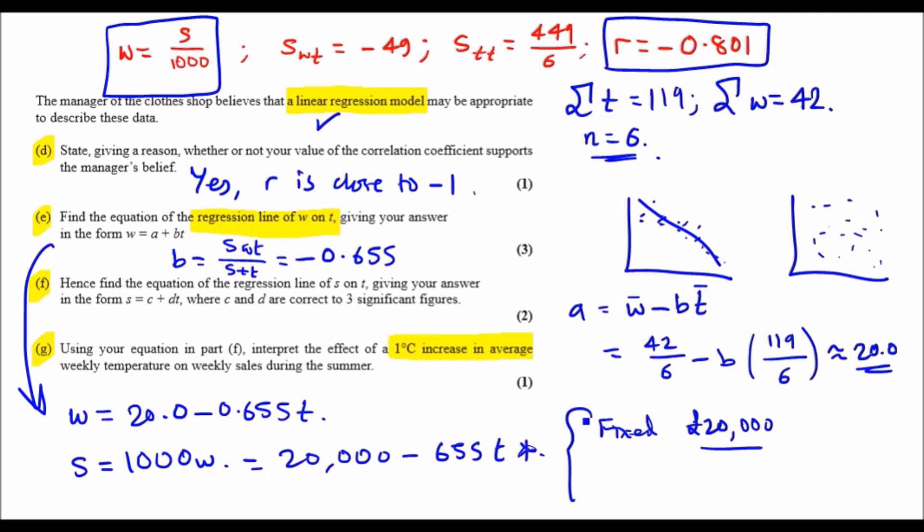So we can say that there are fixed weekly sales of £20,000. So this is the fixed weekly sales, right? And now as for this equation that represents T, we can say that for every 1 degree Celsius, there's a decrease of 655 pounds. So you can say decrease of 655 pounds for every 1 degree Celsius increase on average.